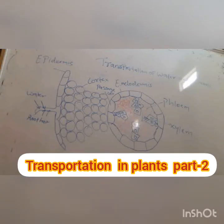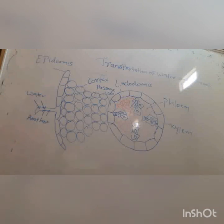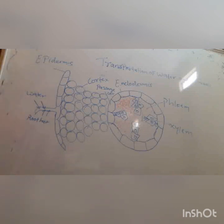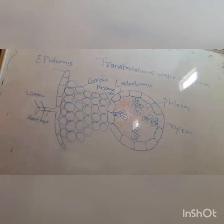Transportation in plants, part 2. In the previous video we saw that the outermost layer of root is known as epidermis, which consists of root hair. Below epidermis there is a multi-layered parenchymatous layer called cortex, having intercellular spaces between them.